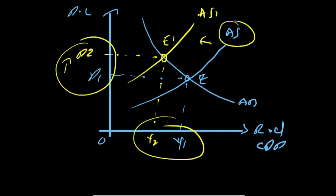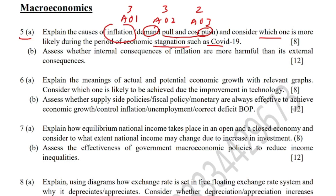For the conclusion, you consider which type of inflation is more likely during economic stagnation. Economic stagnation is when the economy is stagnant and economic activity is very low. When economic activity is very low, it will cause cost-push inflation because aggregate supply will be low.